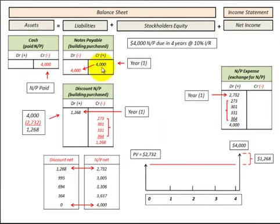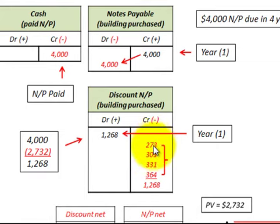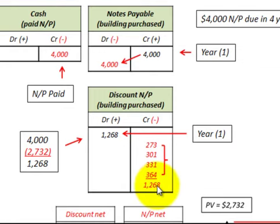Which matches the $4,000 that we have to pay at the end of the fourth year. We needed a balancing entry for each of those years, so we do it through the discount on notes payable. The interest expense incurred as a debit on notes payable, we credit here. We reduce the discount by that interest expense amount each year until the end of the fourth year, when we've depleted all the discount — it's zero. The $1,268 in debits balances with the $1,268 in credits.